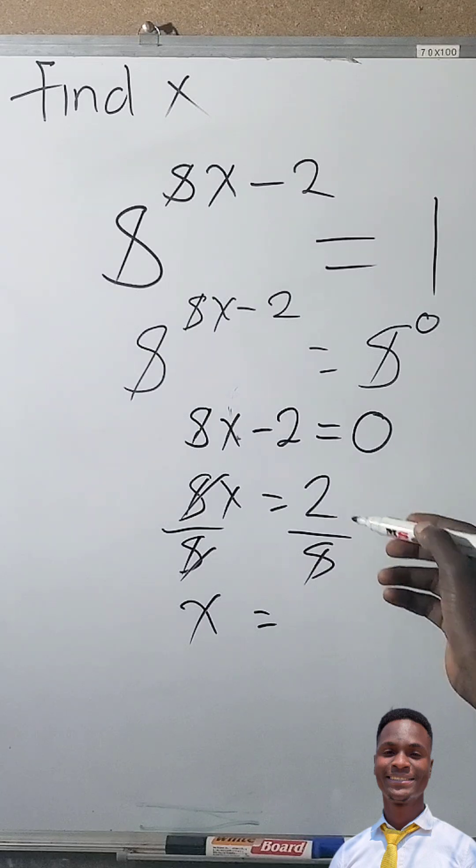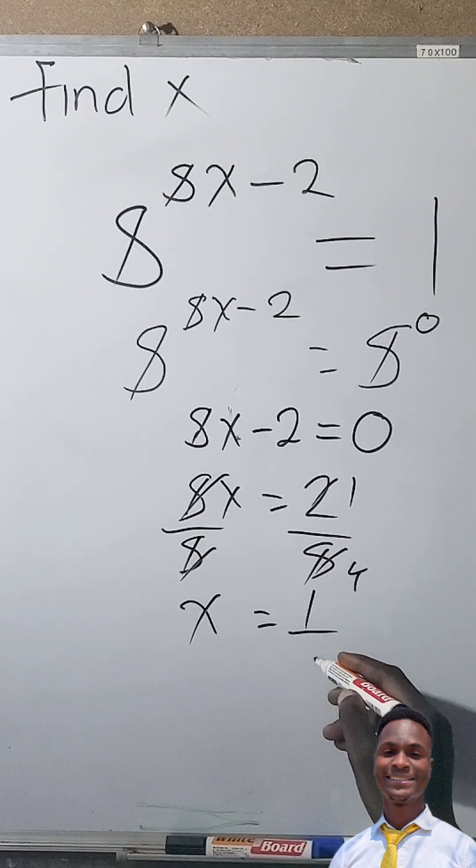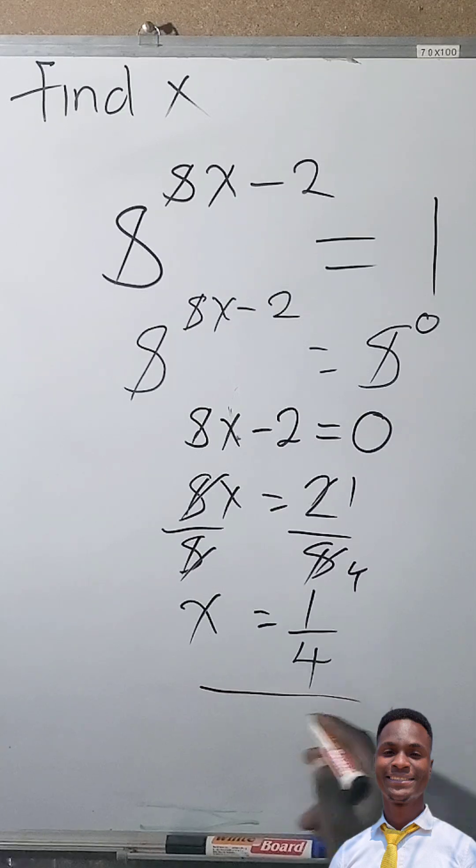So this one can be simplified. 2 into 2 is 1, 2 into 8 is 4. So it's 1 over 4 as the value of x.